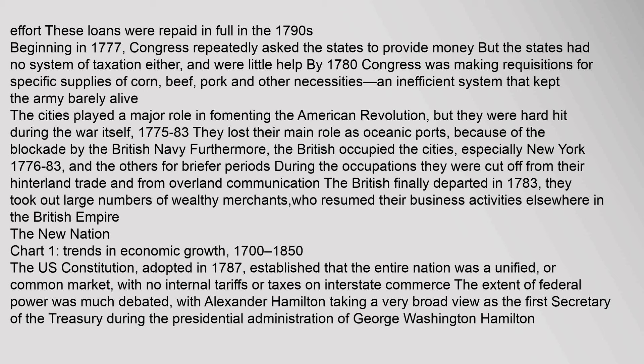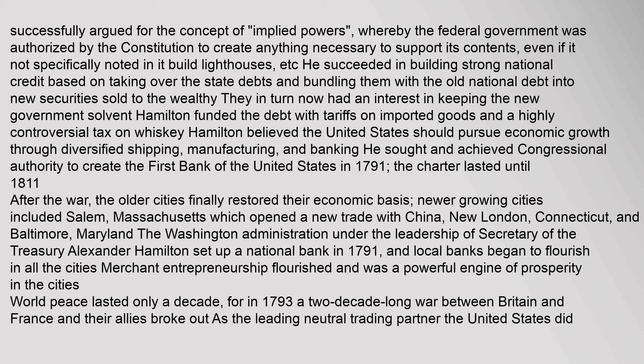The US Constitution, adopted in 1787, established that the entire nation was a unified common market, with no internal tariffs or taxes on interstate commerce. Alexander Hamilton, as the first Secretary of the Treasury under President George Washington, successfully argued for the concept of implied powers. He succeeded in building strong national credit by taking over the state debts and bundling them with the old national debt into new securities. Hamilton funded the debt with tariffs on imported goods and a controversial tax on whiskey. He sought and achieved congressional authority to create the first Bank of the United States in 1791, whose charter lasted until 1811.